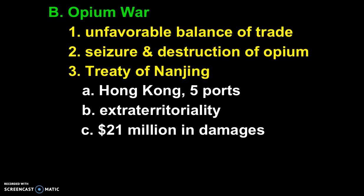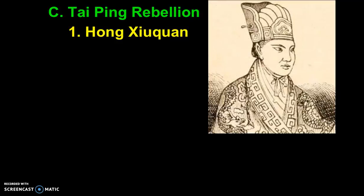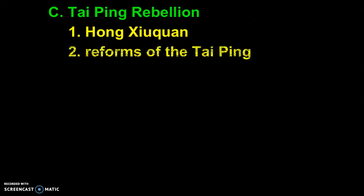Once Britain had access to five ports, other Western countries began applying pressure to China for the same access, and China had to give it because they were in no state to say no. This was followed by the Taiping Rebellion, the Heavenly Kingdom Rebellion, led by Hong Xiuquan, who thought he was the younger son of Jesus, given a God-given mission to purify China — get rid of opium, alcohol, foreigners, and the Qing, because the Qing are not Chinese; they are Manchus. He ends up with his own small kingdom in northern China, promising land for everyone, equality between men and women, all property held in common, and no social classes — very appealing to millions of Chinese.